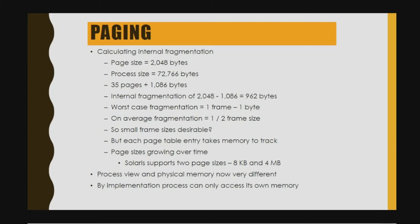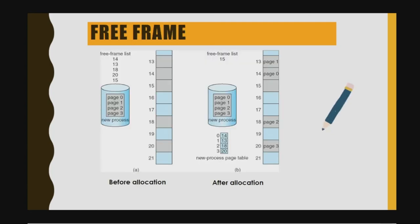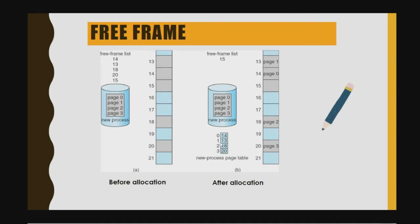Regarding fragmentation, smaller page size is better compared to bigger size. Page size has been growing over time — some processors support two pages: 8 kilobytes and 4 megabytes. The process view and physical memory are now different. Before allocation we have pages 0, 1, 2, 3; after the process, the free frame list is updated. The page table maps page 0 to frame 14, page 1 to frame 13, page 2 to frame 18, and page 3 accordingly.